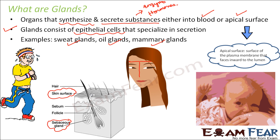Next, the mammary glands: when a new baby is born, during the lactation period, milk comes out of the breasts of the mother because of the mammary glands. The milk is nothing but secretion from these types of glands. Every gland specializes in secretion — they each secrete some substance.